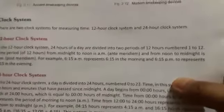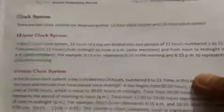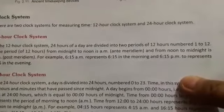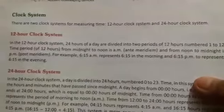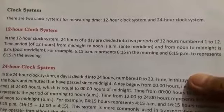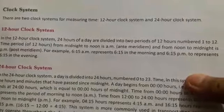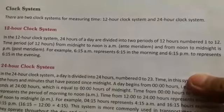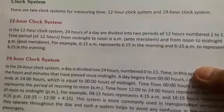Next, we will see clock systems. There are two clock systems for measuring time: 12-hour clock system and 24-hour clock system. Let us see the 12-hour clock system. In the 12-hour clock system, 24 hours of a day are divided into two periods of 12 hours, numbered 1 to 12. Time period from midnight to noon is AM, ante meridiem, and from noon to midnight is PM, post meridiem. For example, 6:15 AM represents 6:15 in the morning and 6:15 PM represents 6:15 in the evening.